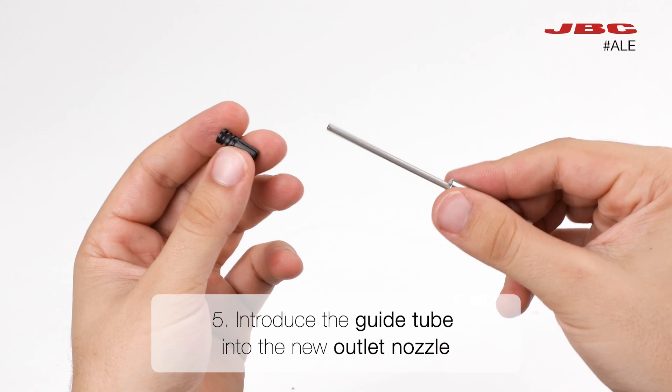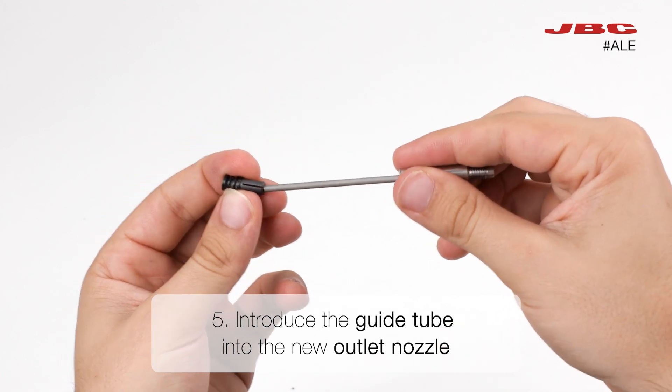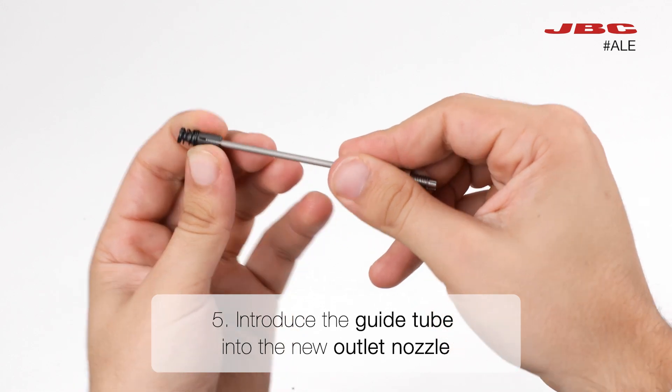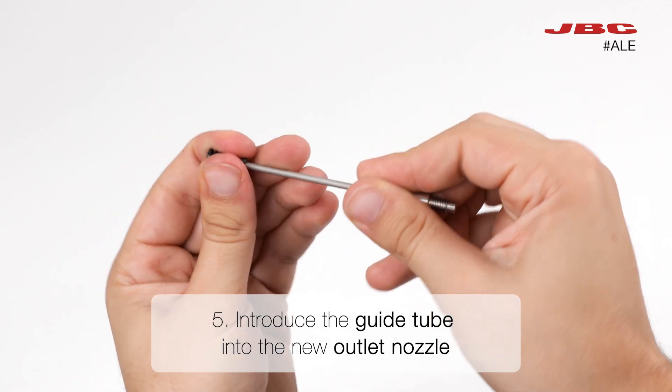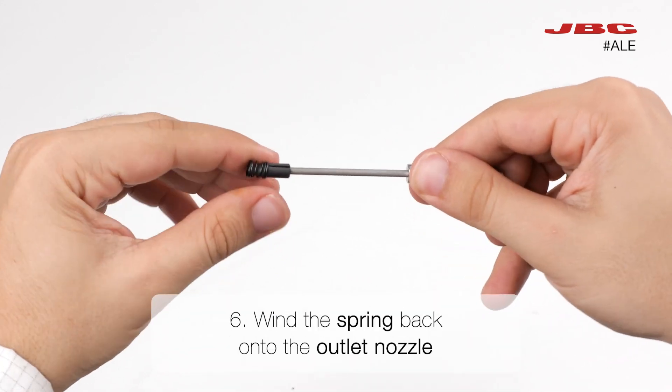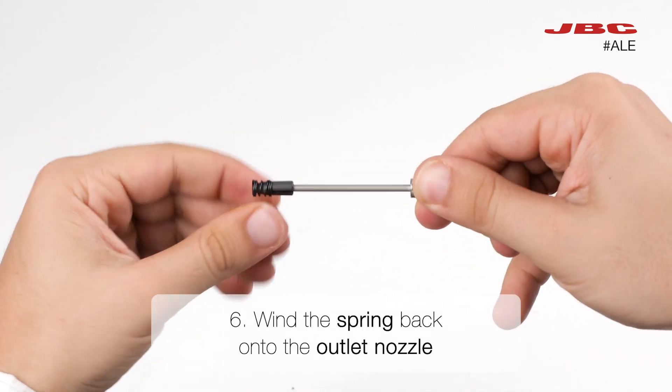Then, introduce the guide tube into the new outlet nozzle. Finally, wind the spring back onto the outlet nozzle.